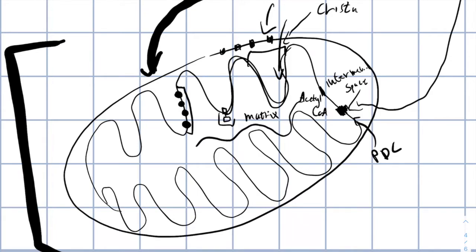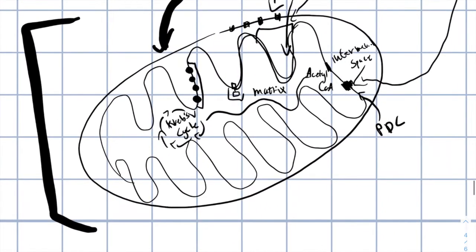Acetyl-CoA, which is now in the matrix, is a very important building block and metabolite to a cycle called the Krebs cycle. While we are not going to talk about the Krebs cycle specifically, you should remember that the Krebs cycle allows us to charge NAD and FAD in order to create NADH and FADH2. The charging of these molecules gives the molecules electrons.